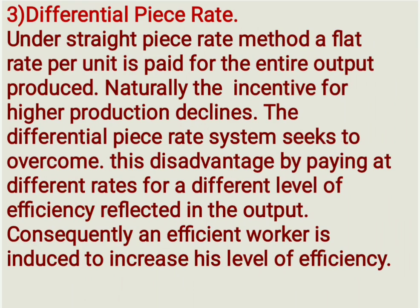Last method: Differential Piece Rate. Under the Straight Piece Rate method, a flat rate per unit is paid for the entire output produced. Naturally, the incentive for higher production declines. The Differential Piece Rate system seeks to overcome this disadvantage by paying at different rates for different levels of efficiency, reflected in the output. Consequently, an efficient worker is induced to increase his level of efficiency. This method has many variants such as Taylor's Differential Piece Rate system, the incentive plan, and Halsey Premium Plan, etc.